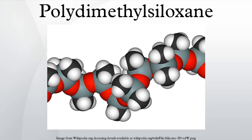Industrial synthesis can begin from dimethyldichlorosilane and water by the following net reaction: n Si(CH3)2Cl2 + n+1 H2O → Si(CH3)2O n + 2n HCl. The polymerization reaction evolves hydrogen chloride.